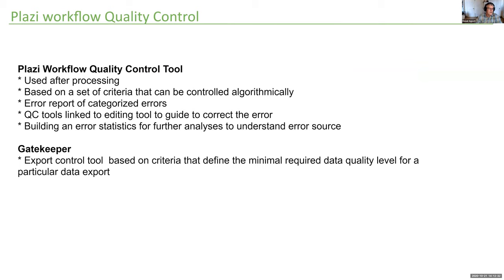The internal workflow quality control tool is implemented after processing of articles. It's based on a set of criteria that can be controlled algorithmically. Error reports categorize errors from severe to not-so-severe. The QC tool is linked to an editing tool that allows you to fix errors directly. It also creates statistics for further analysis to find the probable source of errors.